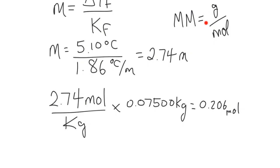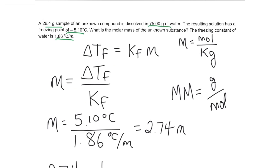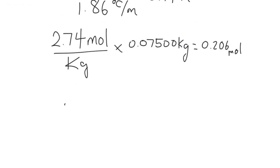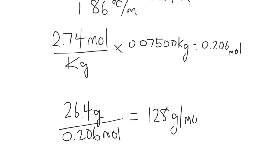Now I can solve for the molar mass using this equation. Remember, molar mass means grams per mole. Now I have the moles and I know how many grams of that substance I started with, so 26.4 grams. We'll divide that by the moles of 0.206 moles. We'll plug that into our calculator and we end up with 128 grams per mole for the molar mass of the substance.